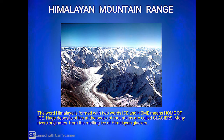Mountains are not only beautiful but they are very useful for us. Many rivers originate from the Himalayas and its glaciers, like Ganga, Yamuna, Satluj, Ravi, and Jhelum. Glaciers are defined as huge deposits of ice on the peaks of mountains. You must know that Ganga originates from Gomukh at Gangotri and Yamuna from the Yamunotri glacier.